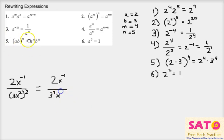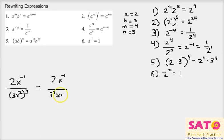So now that we have this, we can move the negative x to the bottom by using this property. And we would have 2 over 3 to the third power times x to the 6 and x to the first power.